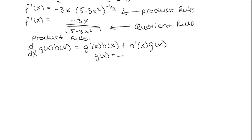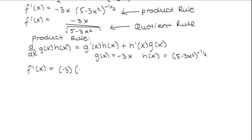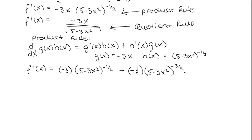Here we see that our g of x is going to be negative 3x, and our h of x is going to be 5 minus 3x squared to the power of negative one half. So now we can start to take our second derivative. The derivative of our first function is negative 3, multiplied by our second function, 5 minus 3x squared to the power of negative one half. Then we add the derivative of our second function multiplied by our first function. Using chain rule again, that derivative is negative one half times 5 minus 3x squared to the power of negative 3 over 2, multiplied by negative 6x, and then multiplied by the first function, negative 3x.